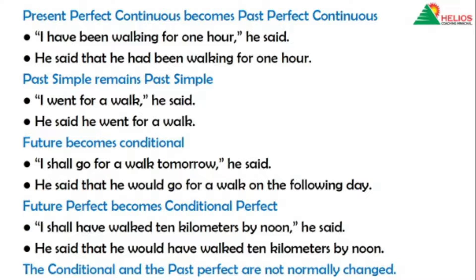Next, future becomes conditional. Example: 'I shall go for a walk tomorrow,' he said — there is a future with 'shall.' In indirect: He said that he would go for a walk on the following day. 'Tomorrow' is replaced by 'the following day' and 'shall' is replaced by 'would.'